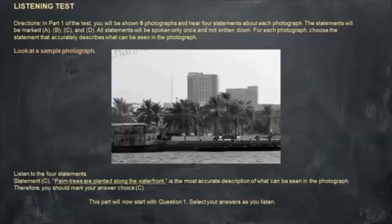Part 1 Directions. In part 1 of the test, you will be shown 6 photographs and hear 4 statements about each photograph. The statements will be marked A, B, C and D. All statements will be spoken only once and not written down. For each photograph, choose the statement that accurately describes what can be seen in the photograph.